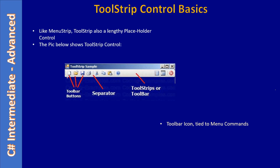Toolbar icons are tied to menu commands. Suppose we add a menu to this form — File is the menu on the MenuStrip, then we will have File New, File Open, File Save, File Print as menu items. The same commands can be given in a toolbar as well, so the user can directly click on a particular icon and trigger the event. For example, to save a file using the menu the user clicks File then Save, but with the ToolStrip they can directly click the Save button.